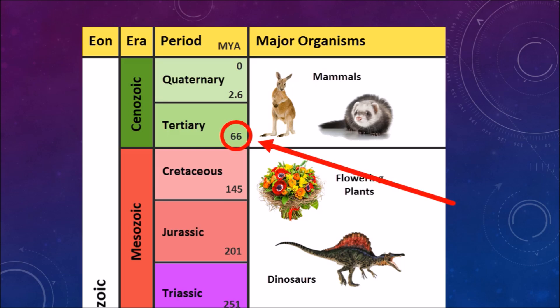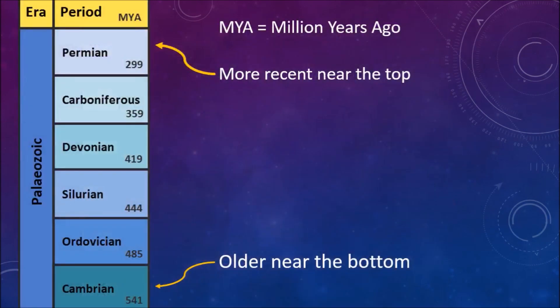There are numbers at the boundaries between the periods. Those numbers tell us how long ago that boundary happened, in millions of years. For example, the end of the Cretaceous period was 66 million years ago, when it gave way to the Tertiary period. You can see that the more recent periods are near the top of the timescale. The oldest periods are way down the bottom.